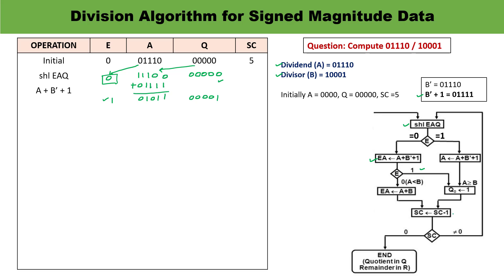The sequence counter decrements by 1, so it is now 4. The process repeats. Perform shift left again on E, A, Q. After shifting, E becomes 0, A becomes 10110, and Q becomes 0010.